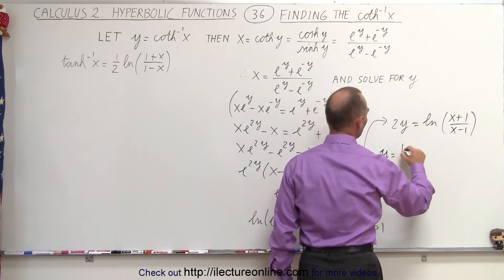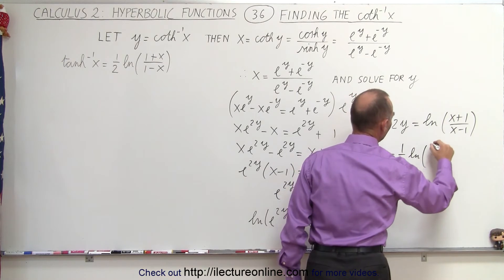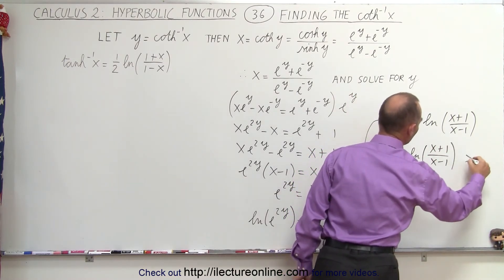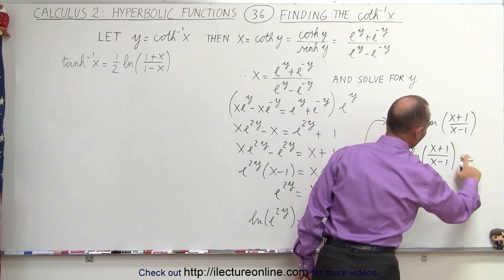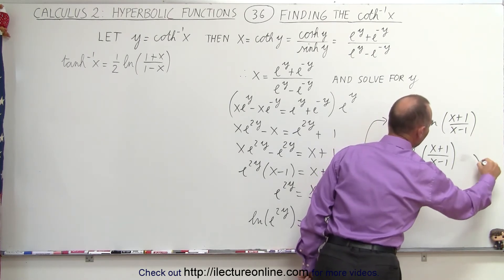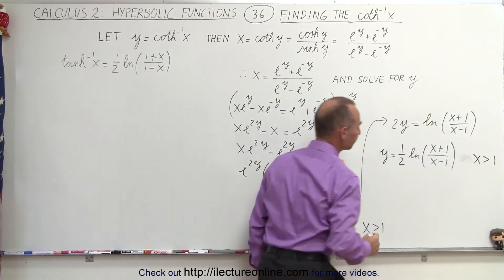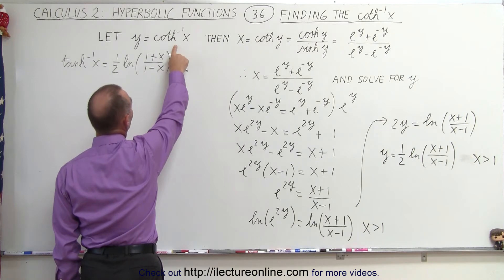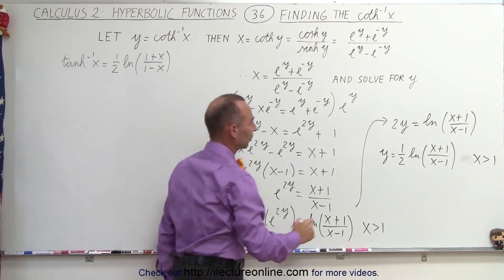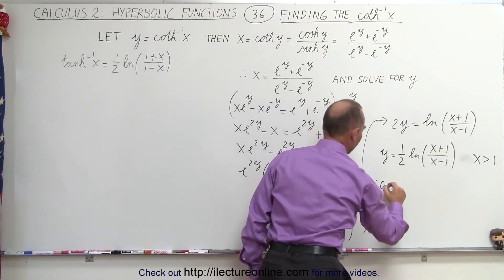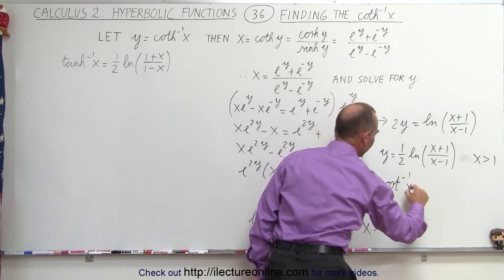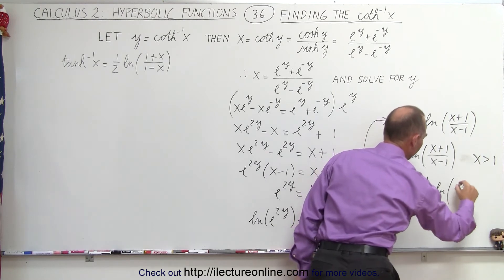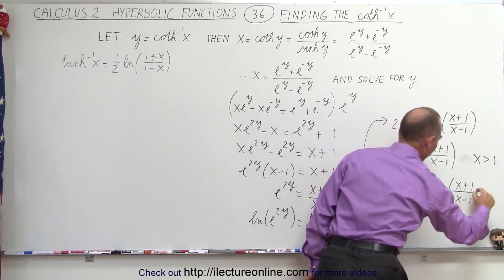We get y is equal to 1 half the natural log of x plus 1 divided by x minus 1, with the restriction that x is greater than 1. So then we come back up here and we realize that y was equal to the inverse hyperbolic cotangent of x. So therefore, we can say that the inverse hyperbolic cotangent of x is equal to 1 half the natural log of x plus 1 divided by x minus 1.